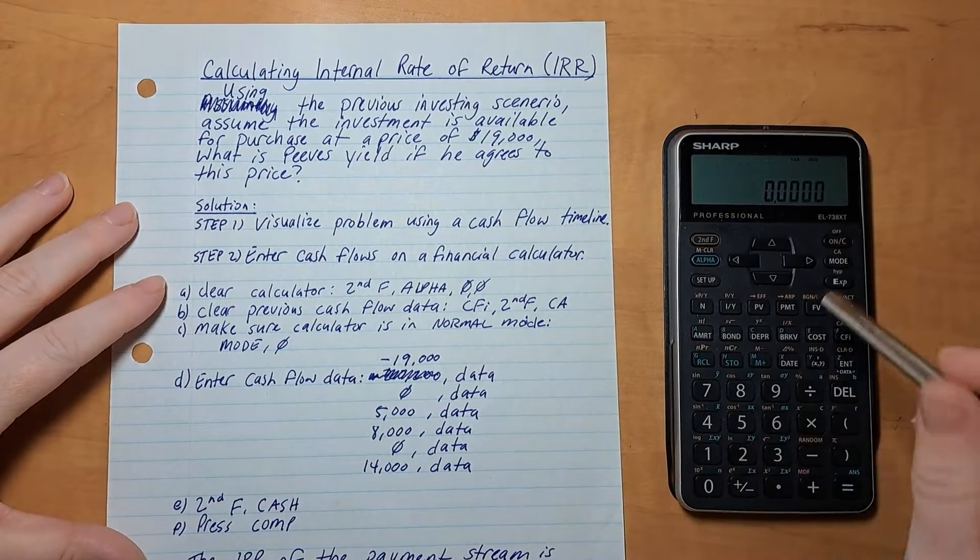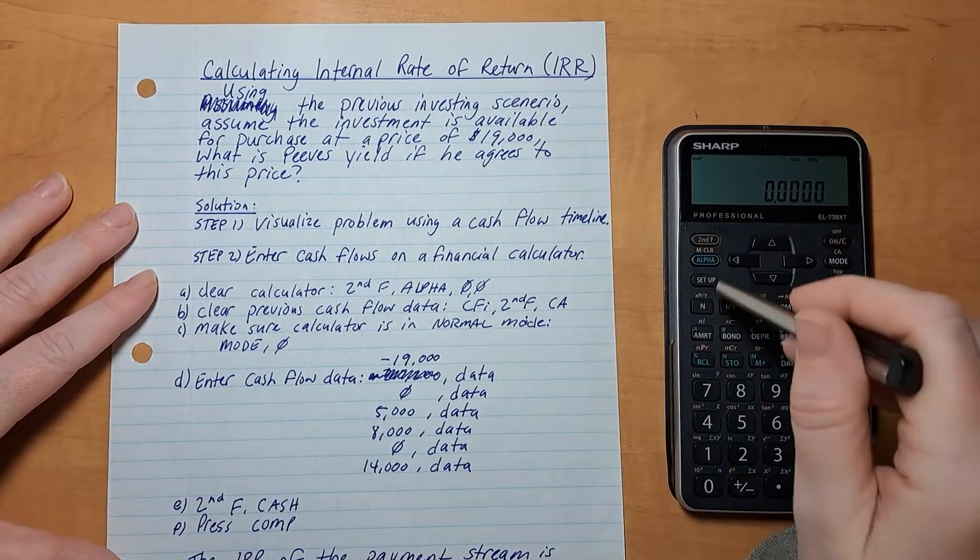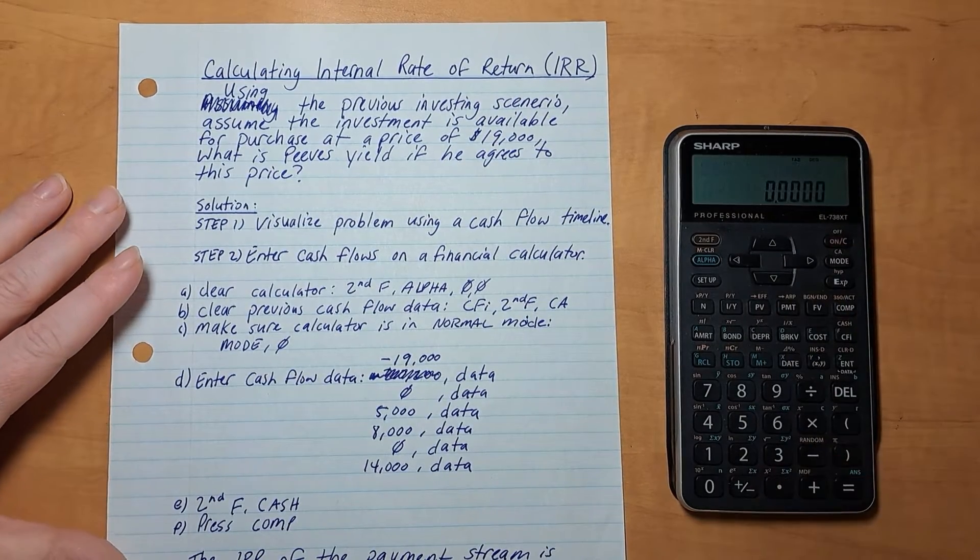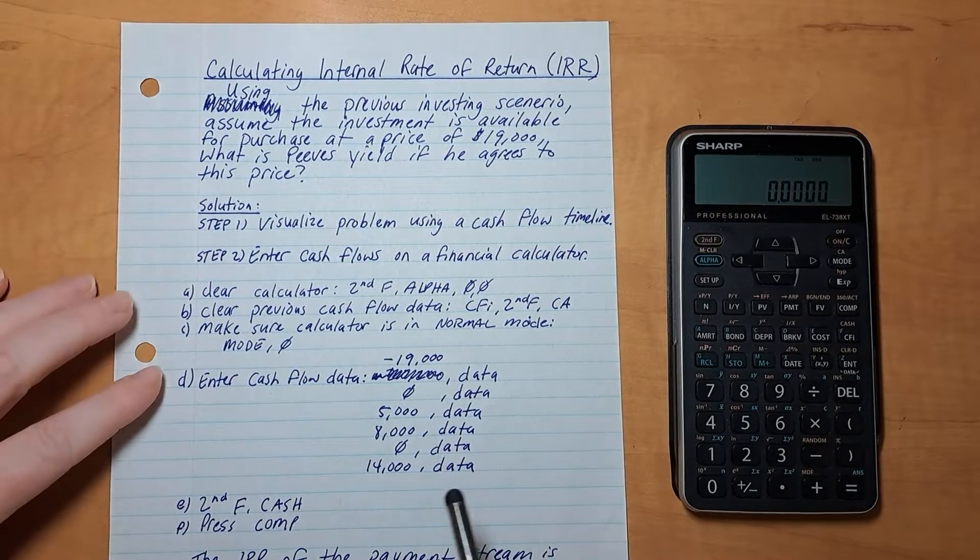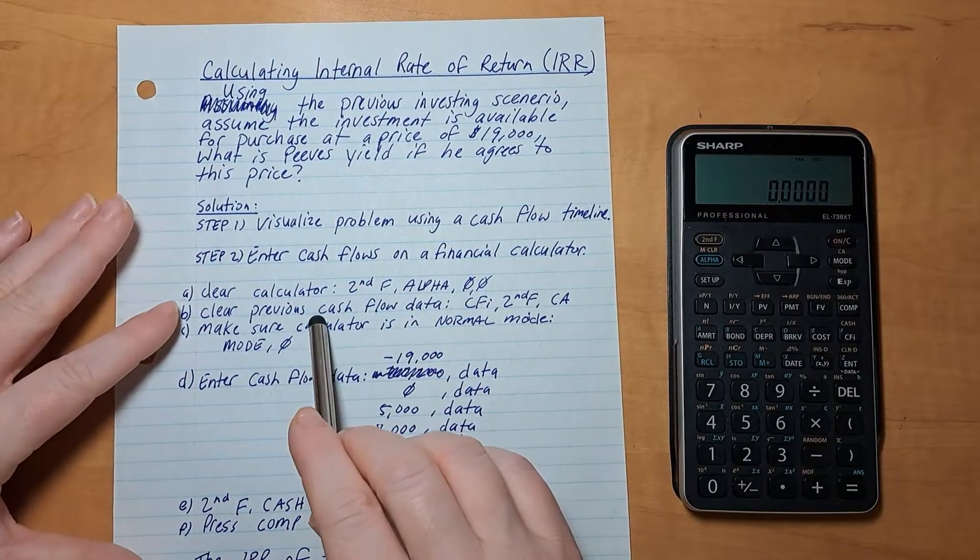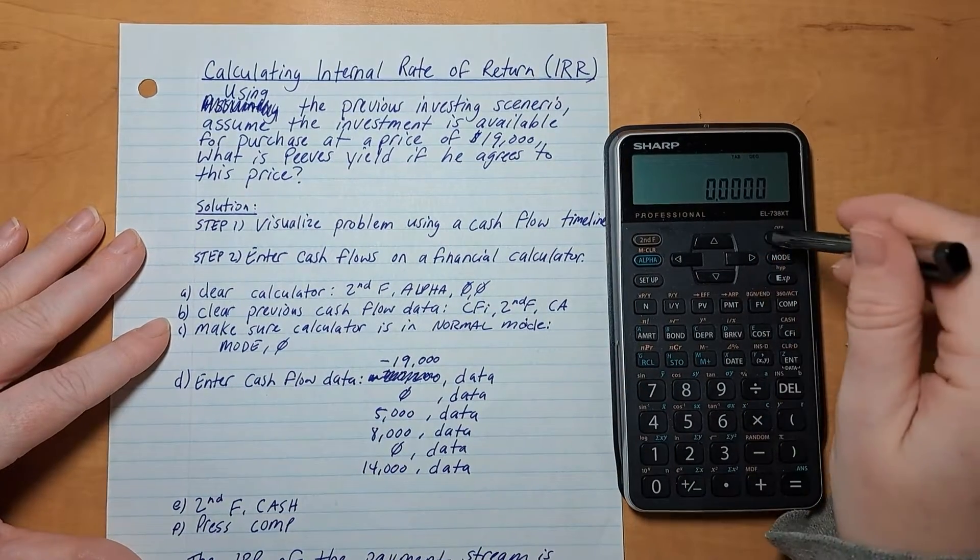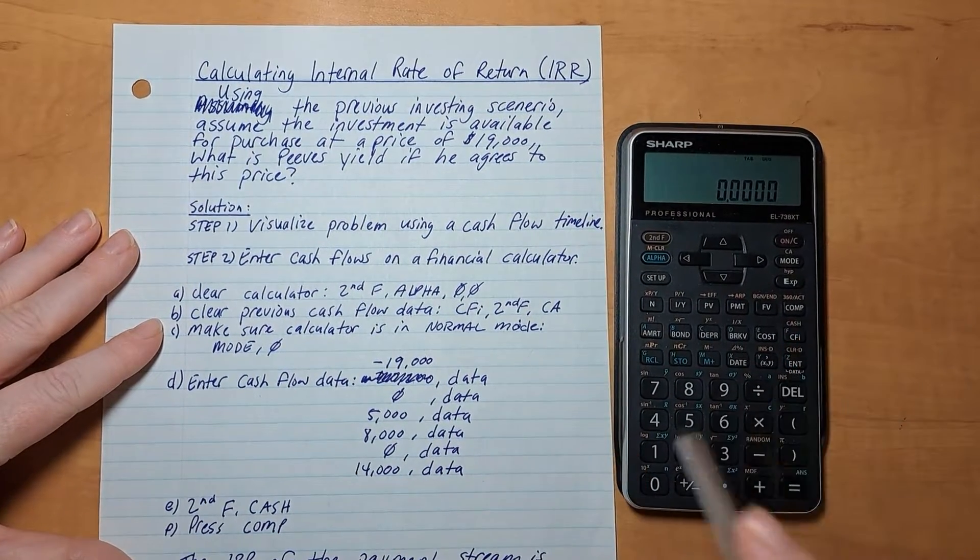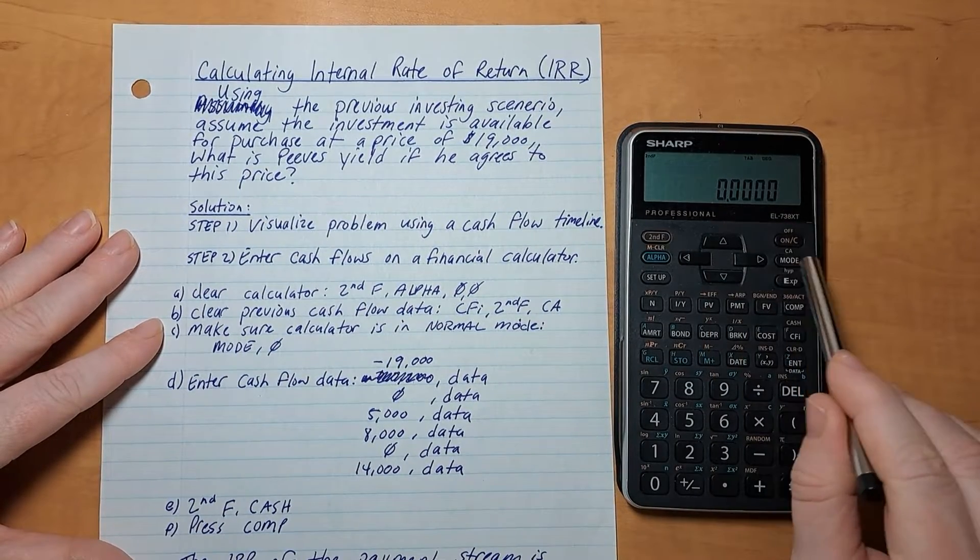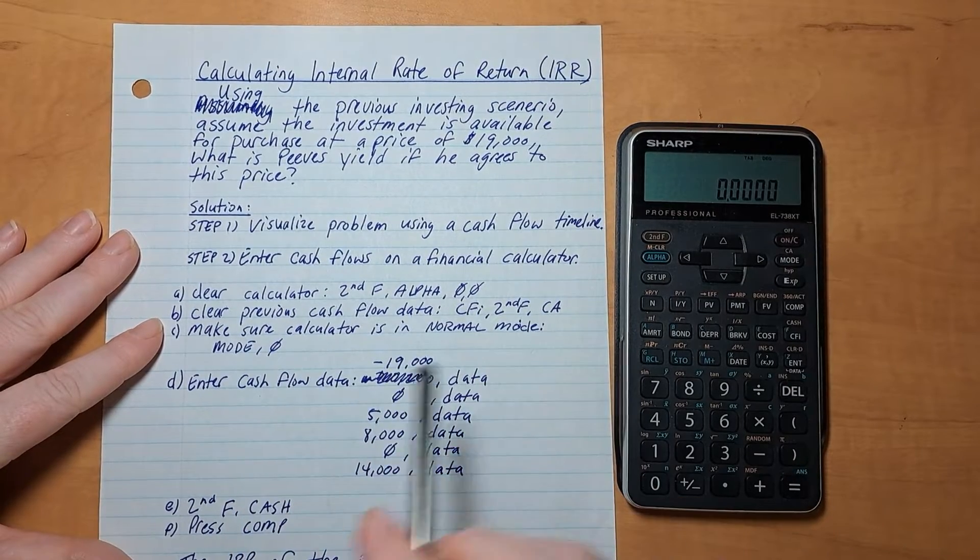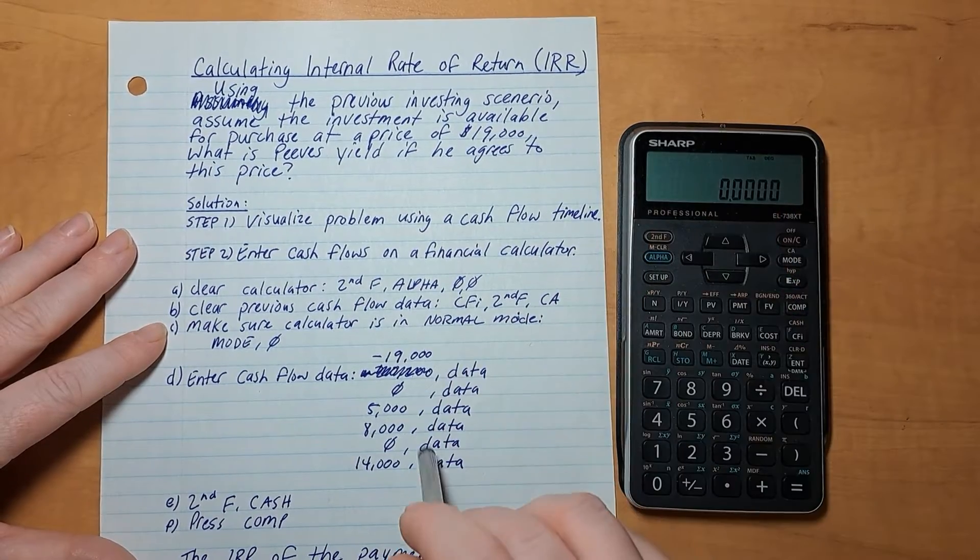So that is second function alpha 00. Getting into my coffee. Second function alpha 00. Put a piece of paper over top of it. There we go. Second function alpha 00. And now we want to clear any previous cash flow data that may be stored in the calculator. So we do that by pressing the CFI button, second function, and the CA or mode button. And that's clearing all the cash flow data. You make sure your calculator is in normal mode and it doesn't say anything, so it is normal mode.